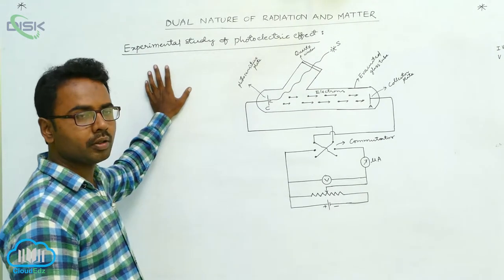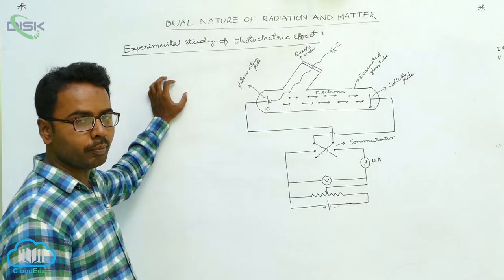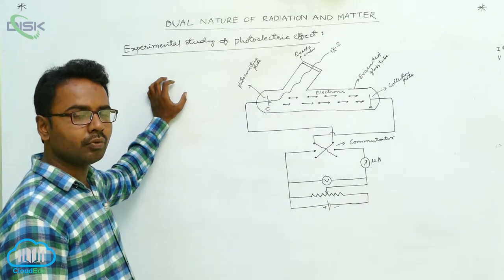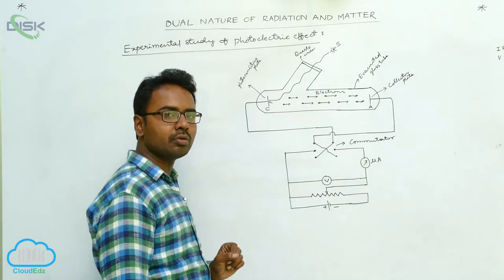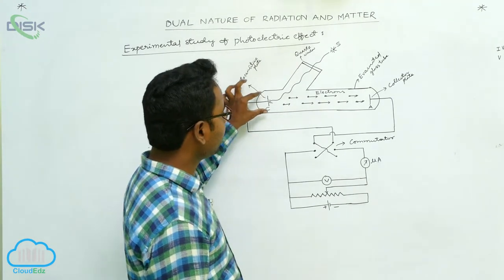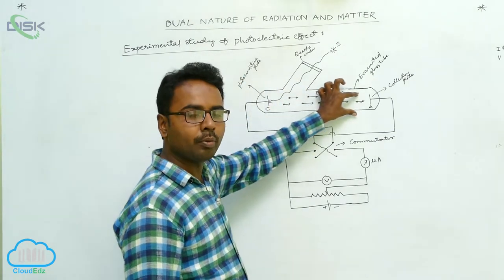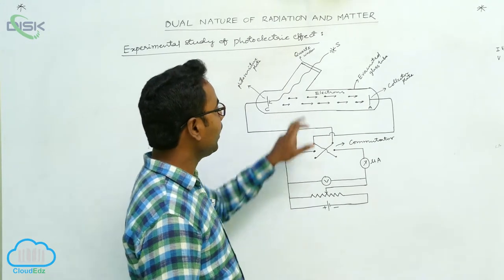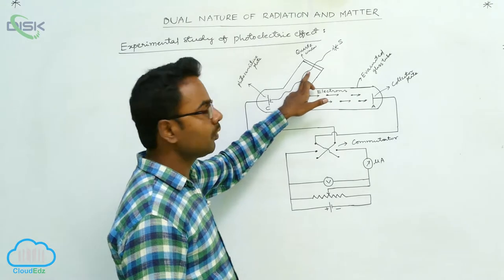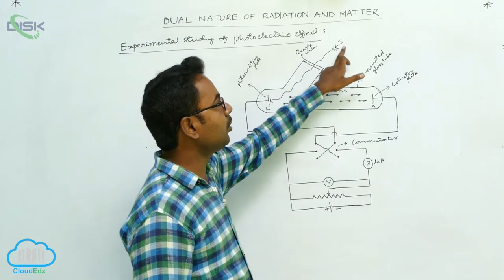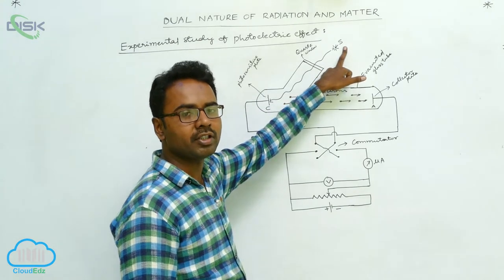Here we study the photoelectric effect experimentally. This experimental arrangement consists of a quartz or glass tube — an evacuated glass tube made up of quartz or glass material. It is provided with a window called the quartz window, through which we allow light from the monochromatic source to enter.